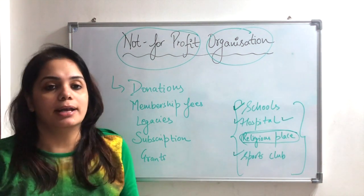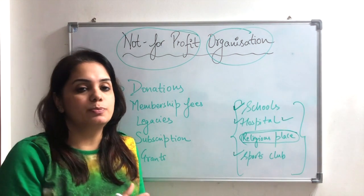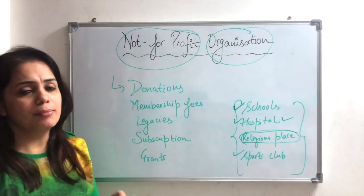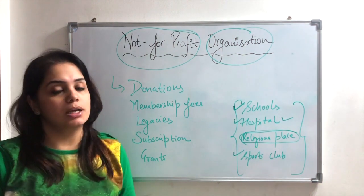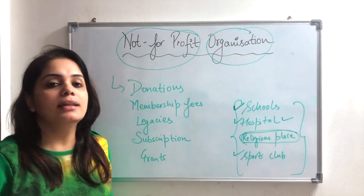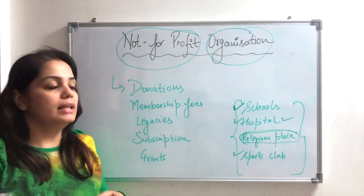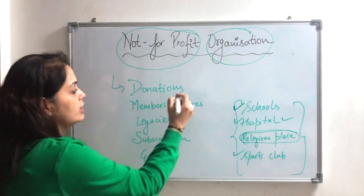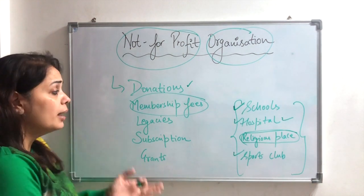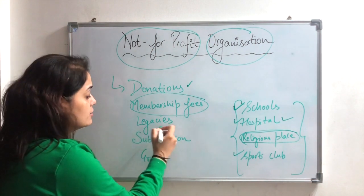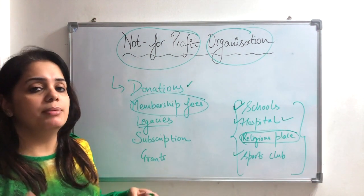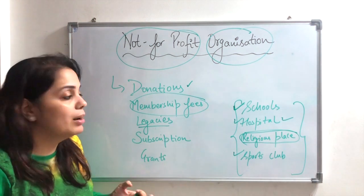Basically, you can say it is a charitable organization which has been established through charity or donations. There are no debtors or creditors in such an organization. Whatever fund we get, we write donations, membership fees, or legacies — which means people who have written in their will that they will donate a certain amount of money to this organization. That amount received is called a subscription.